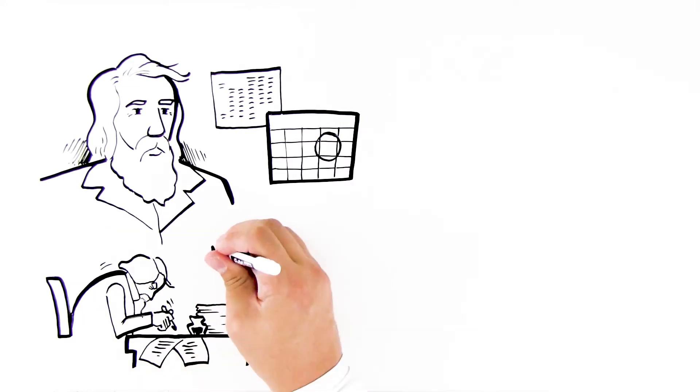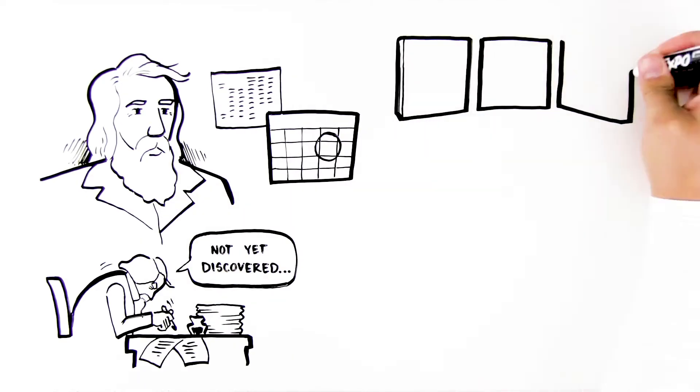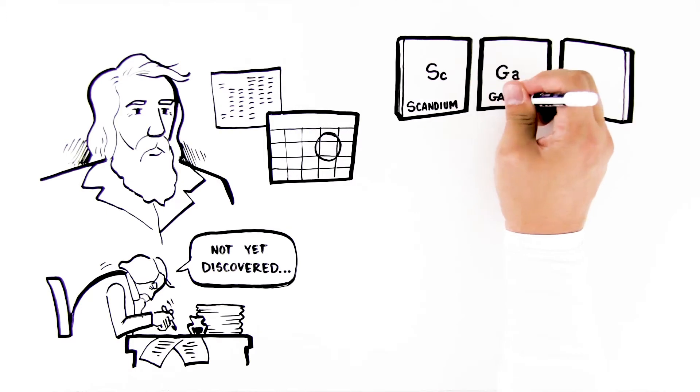Based on the relationships he observed, Mendeleev predicted the existence of elements not yet discovered, like scandium, gallium, and germanium, which were discovered about a decade later.